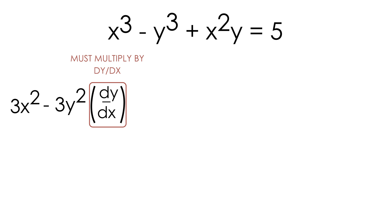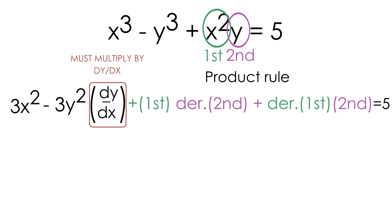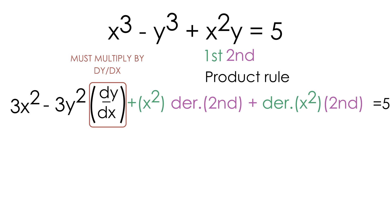Now let's take the derivative of the x squared y term. Notice that we have two things being multiplied together — x squared multiplied by y — so we have to use the product rule. I like to label x squared as the first term and y as the second. The product rule formula is: the first term times the derivative of the second term, plus the derivative of the first term multiplied by the second term. Let's plug in x squared for first and y for second.